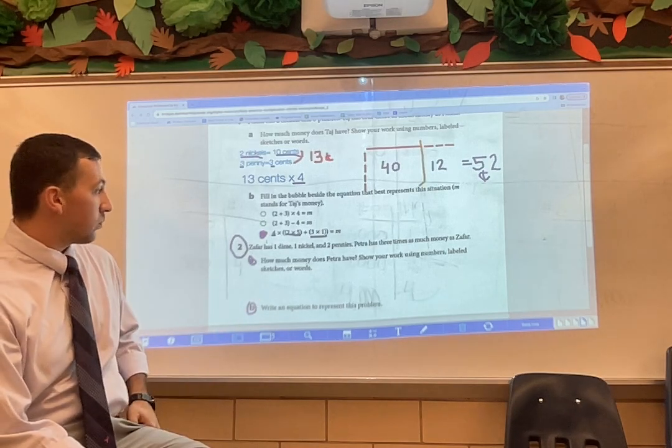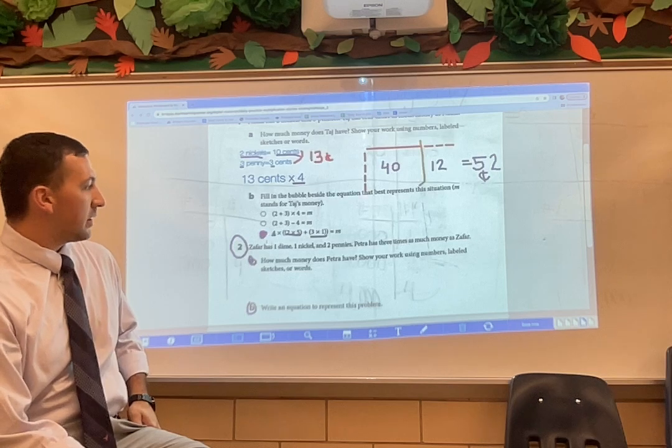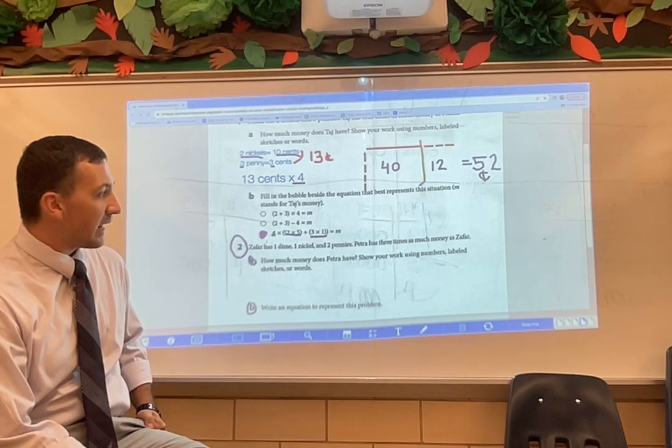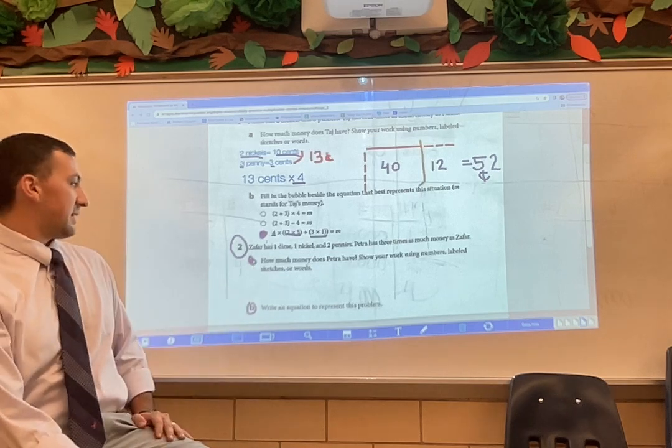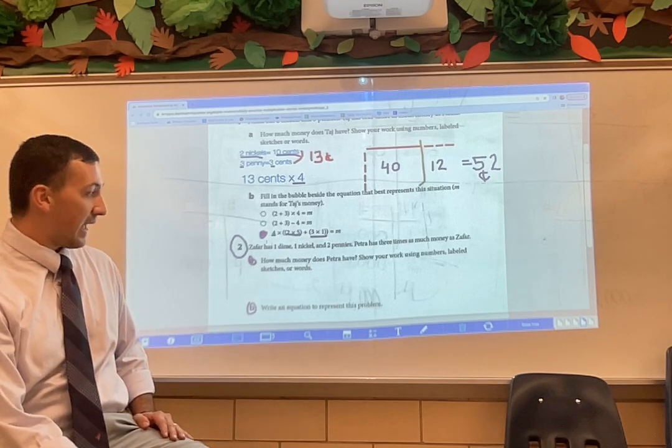Zafar has one dime, one nickel, and two pennies. Petra has three times as much money as Zafar. Part A is going to ask how much money does Petra have?